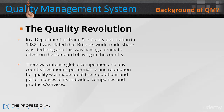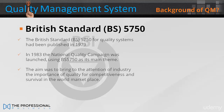In a Department of Trade and Industry publication in 1982, it was stated that Britain's world trade share was declining, and this was having a dramatic effect on the standard of living in the country. There was intense global competition, and any country's economic performance and reputation for quality was made up of the reputation and performance of its individual companies, products, and services. The British Standard BS 5750 for quality systems had been published in 1979, and in 1983 the National Quality Campaign was launched, using BS 5750 as its main theme.